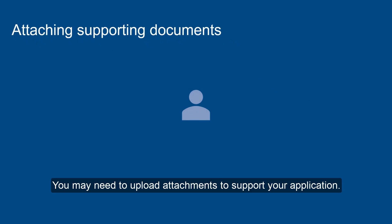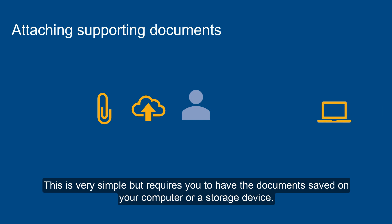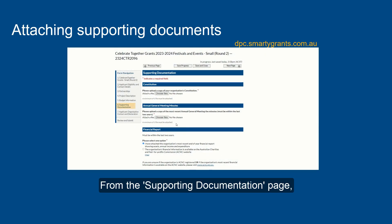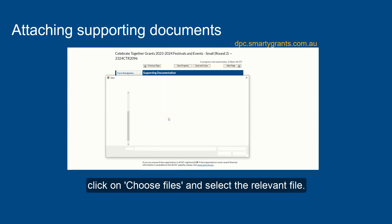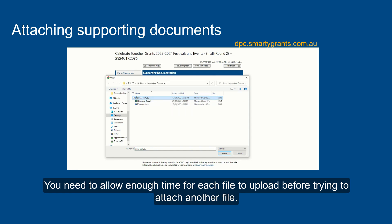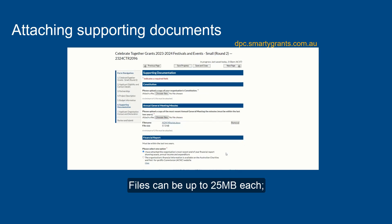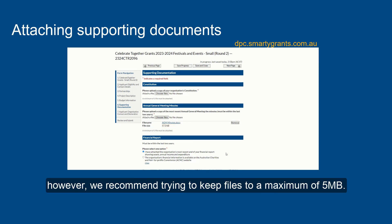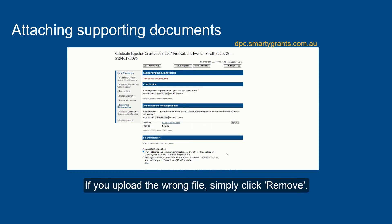You may need to upload attachments to support your application. This requires you to have the documents saved on your computer or a storage device. From the Supporting Documentation page, click on Choose Files and select the relevant file. Allow enough time for each file to upload before trying to attach another file. Files can be up to 25MB each; however, we recommend keeping files to a maximum of 5MB. The larger the file, the longer the upload time. If you upload the wrong file, simply click Remove.